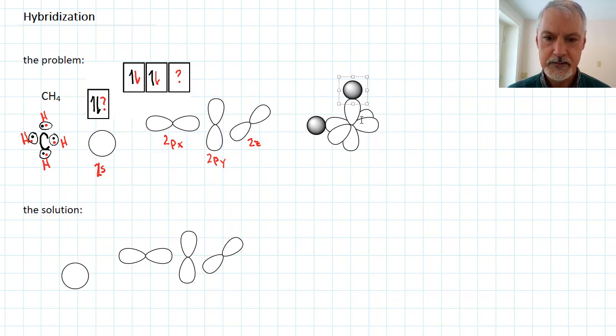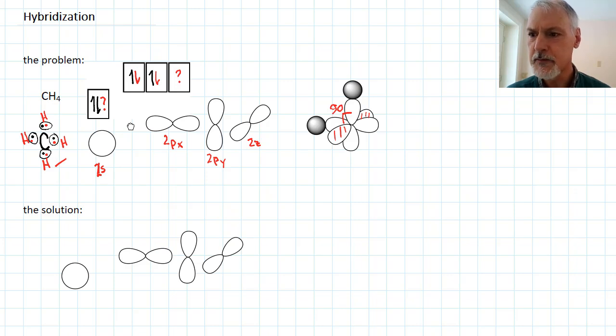But how do we bond with this one? Because this one essentially is already empty, it doesn't have any electrons in it. And the other problem is that angle in there would be predicted to be 90. And as I said, we need 109 degrees. The solution is the concept of hybridization.